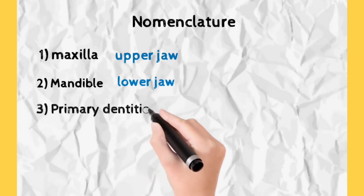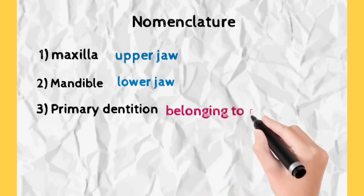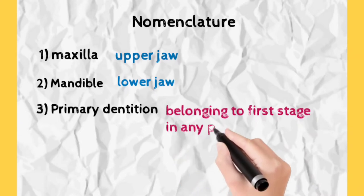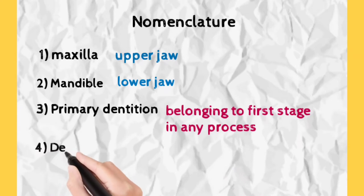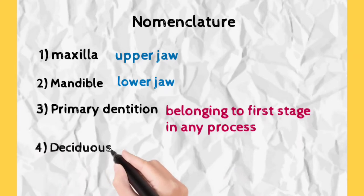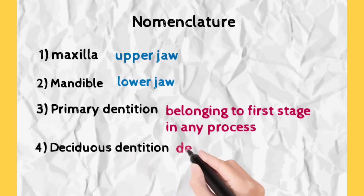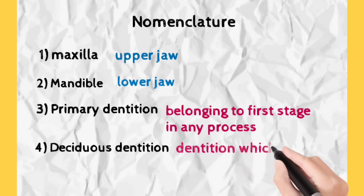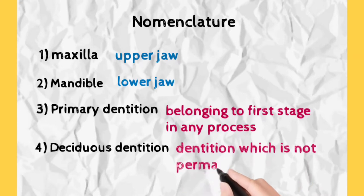Third term is primary dentition. When primary word comes, it means it belongs to the first stage of development. Our milk teeth come first. That is the reason why milk teeth are also called primary dentition. Then comes deciduous dentition. Deciduous means which fall off, which are not permanent. Milk teeth fall off, so they are also known as deciduous dentition.